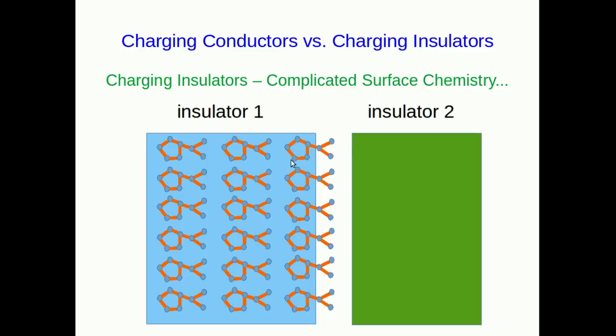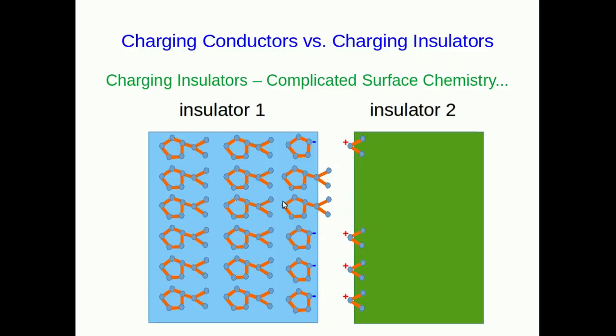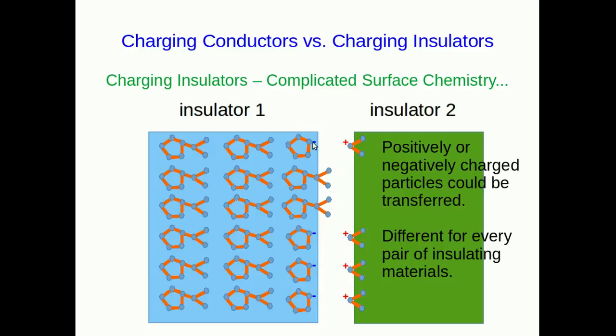Now let's say we rub these two insulators together. What can happen when we rub them together is that we cause a bunch of bonds on the surface of this insulator to break, and so we get some of the molecular ions, say the negative ones, left behind on insulator 1 and the positive ones transferred over to insulator 2. But don't think that it's always the positive ones that get transferred. When you're rubbing insulators together, you can get positively charged or negatively charged molecular ions transferred. The transfer can go either way, and in fact there may be a whole lot of different kinds of molecular ions being formed, and this process is basically different for every pair of insulating materials that you rub together. This is very, very complicated, and really it comes down to surface chemistry, because you're modifying molecules on the surface because of their interactions with the other surface that it's rubbing against.